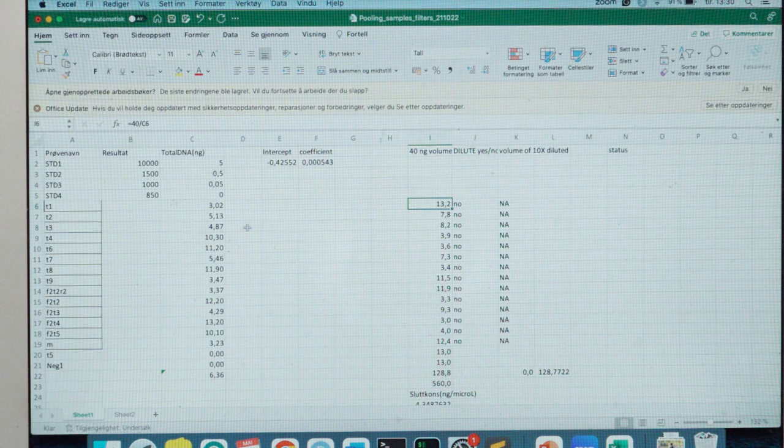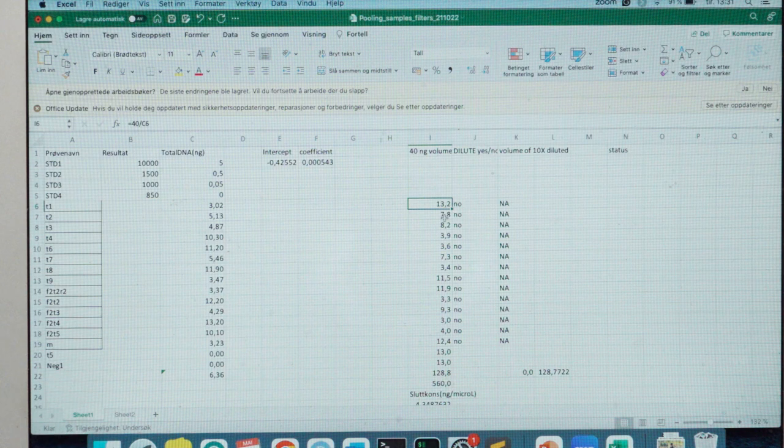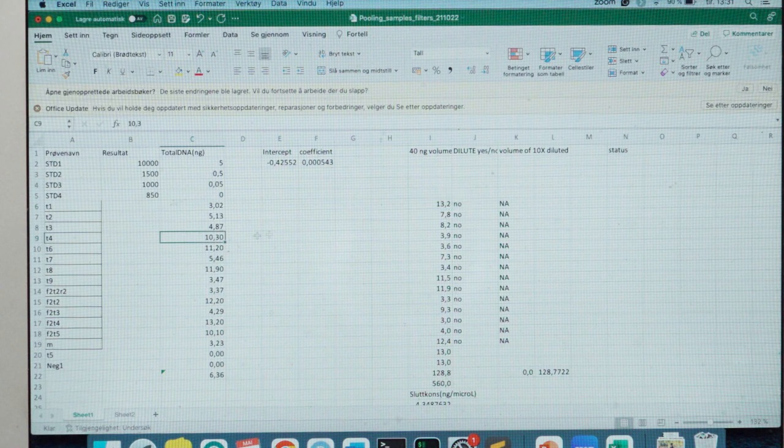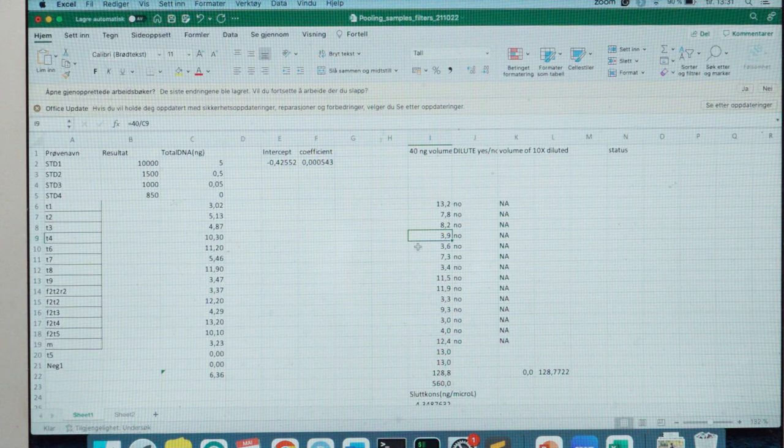The next one, which has a higher concentration, here we need less, we need 7.8. And here this one that we have 10 nanograms per microliter, or just slightly above, then it's 4, right? So 10 times 4 is 40.